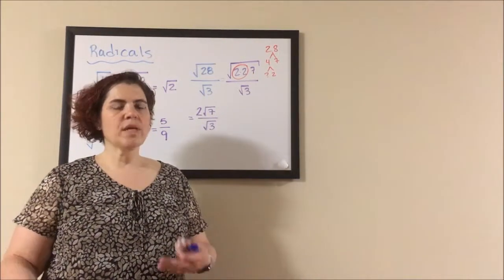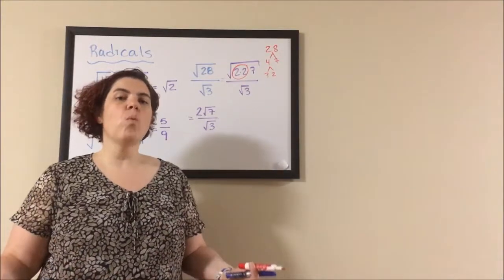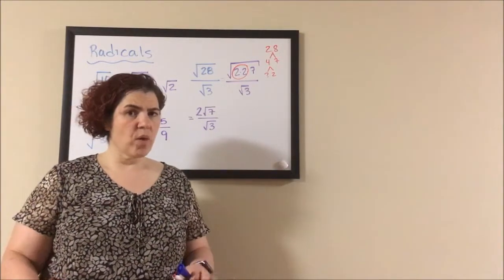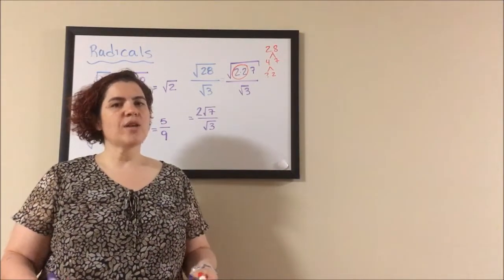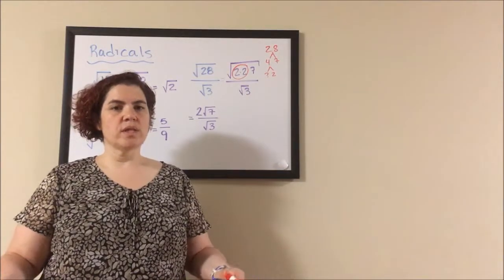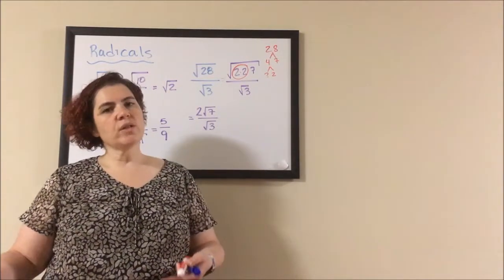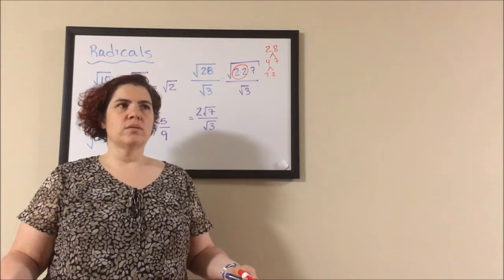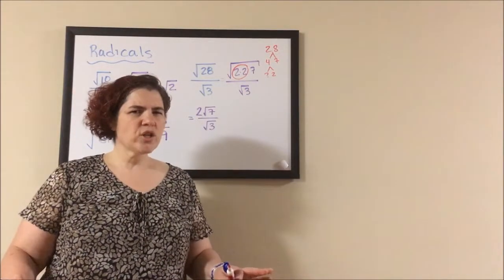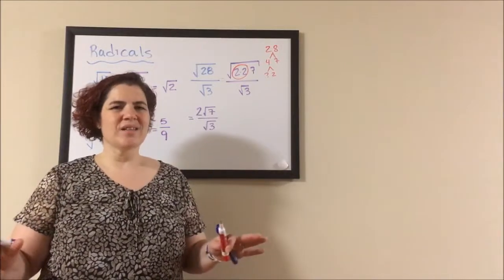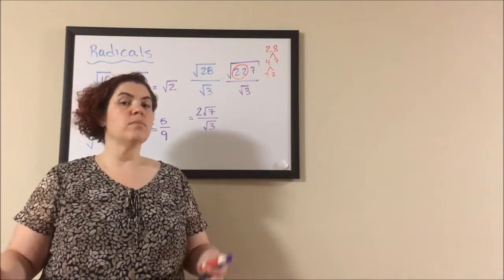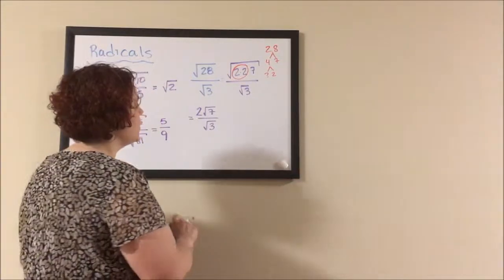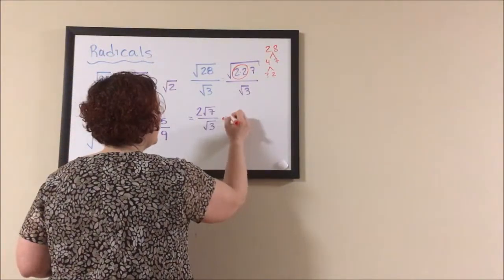In rationalizing the denominator, we need to multiply some form of 1, an interesting form of 1, to the numerator and denominator to clear that radical out of the denominator. So what we need to do to get rid of the square root of 3 is to square it. But we're not squaring the fraction because we don't have an equal sign and that just isn't going to maintain our fraction. What we need to do is multiply this by 1.